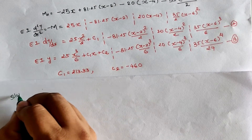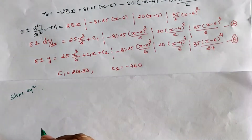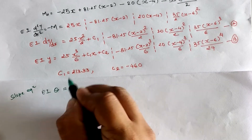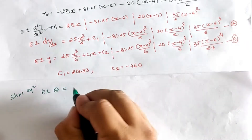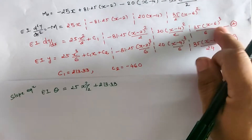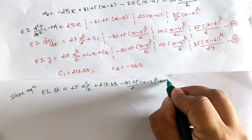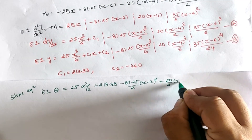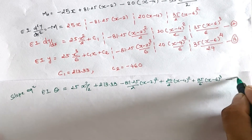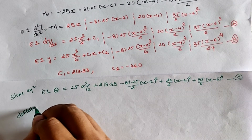Now replacing the values of C₁ = 213.33 and C₂ = −460 into the slope and deflection equations formed earlier, we obtain the slope equation (Equation C) and the deflection equation (Equation D) for the mirror image.